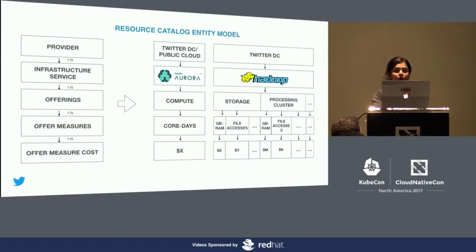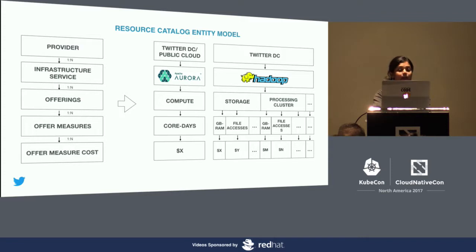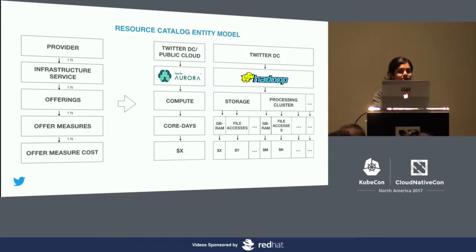On the contrary, an infrastructure like Hadoop offers clusters that store and process data as separate offerings with measures such as GB-RAM, number of accesses per day, etc. We were able to onboard other infrastructures like Manhattan and Blobstore in a similar way, as our entity model can represent these disparate infrastructures in a consistent way. We worked with each individual infrastructure team to identify the resource and subsequently worked with capacity planners and the finance team to define a unit cost.